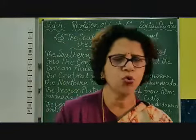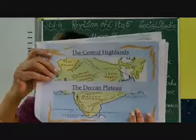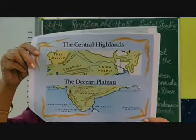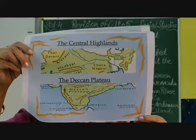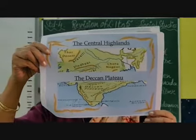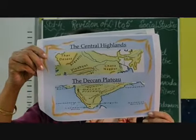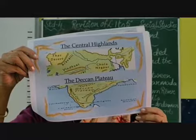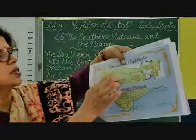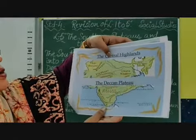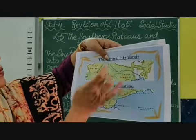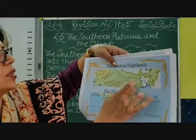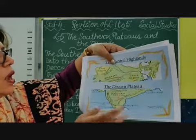Taking the two divisions of our southern plateau — the central highlands and the Deccan plateau — the central highlands are surrounded, as you can see in the map, by the Aravali hills towards the north-west, the Vindhya range towards the south, the Chota Nagpur plateau towards the east, the Rajmahal hills towards the north-east, and the Malwa plateau in the centre. As you can see, here are the northern plains, the Thar desert, the Aravalis, the Vindhyas, the Chota Nagpur plateau, and the Narmada river.